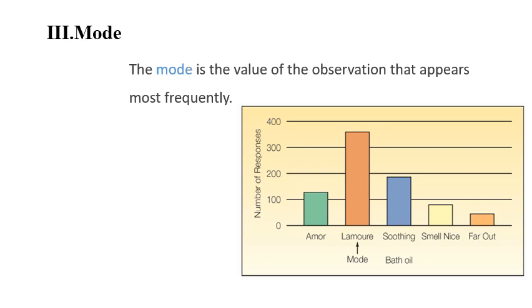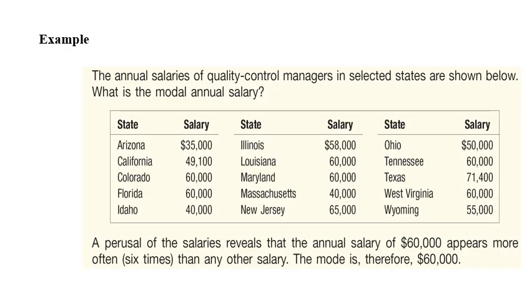Mode is the third measure here and is the value of observation that appears most frequently. In this case, the most frequently one is the mode because it exceeds 300 and approaches 400 times. An example of this for annual salaries as given in this example: we can see that the most repeated salary is 60. If you count, we can see that this is repeated six times out of 15.